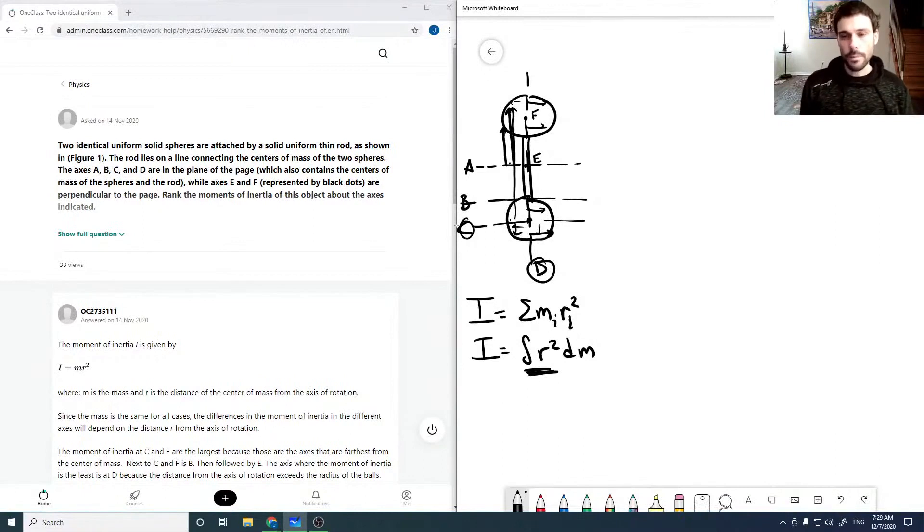Because it's perpendicular distance and this is a 3D object, we would expect since C goes through the center of a sphere and F, although it goes out of the page, it's also going through the center of a sphere. So if we rotated this 90 degrees, then really what we'd have is the same looking object.